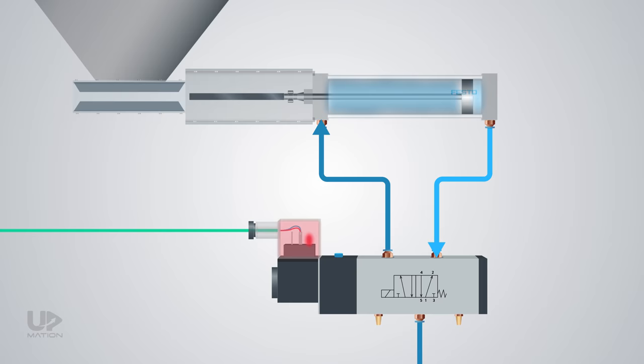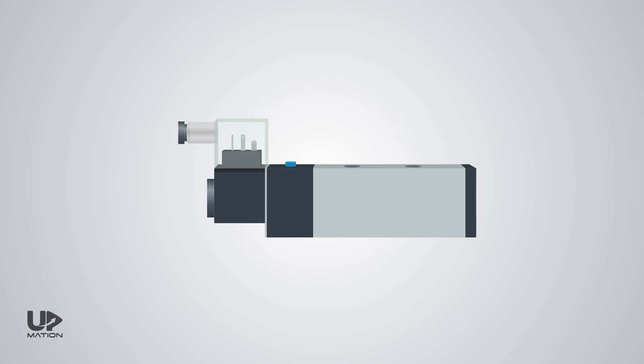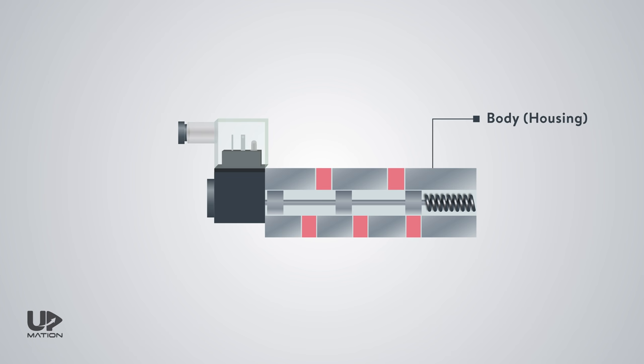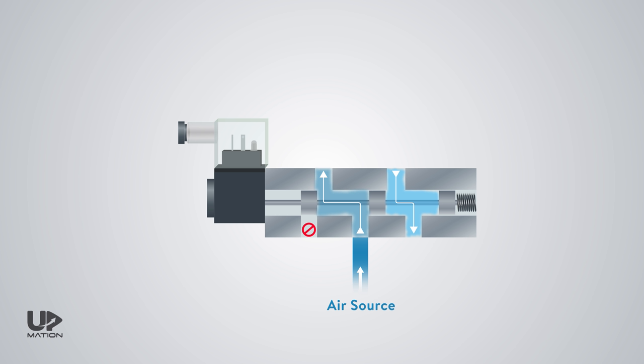Now, let's take a look at the components and simplified mechanism of this directional control valve. This is the body or housing of the control valve inside of which there are the paths that air flows through. The holes you see here are called ports. Within the housing, there is a moving part that leads the air toward different ports of the valve and blocks the others. This moving part is commonly referred to as a spool.